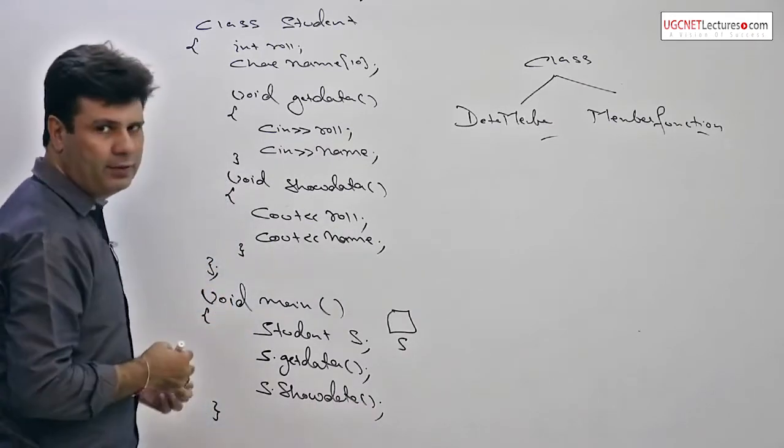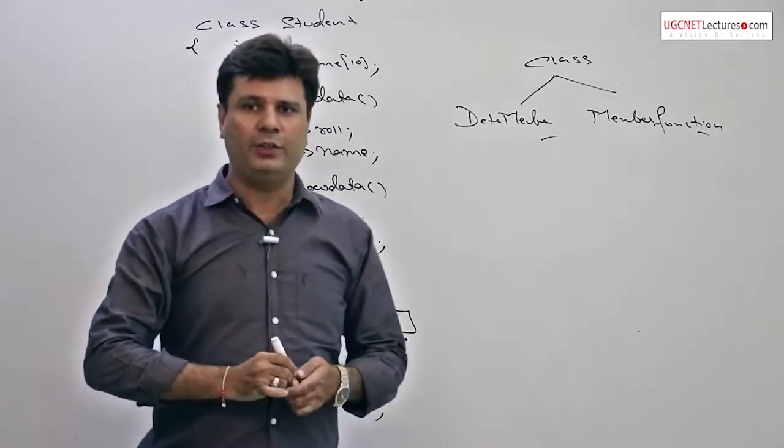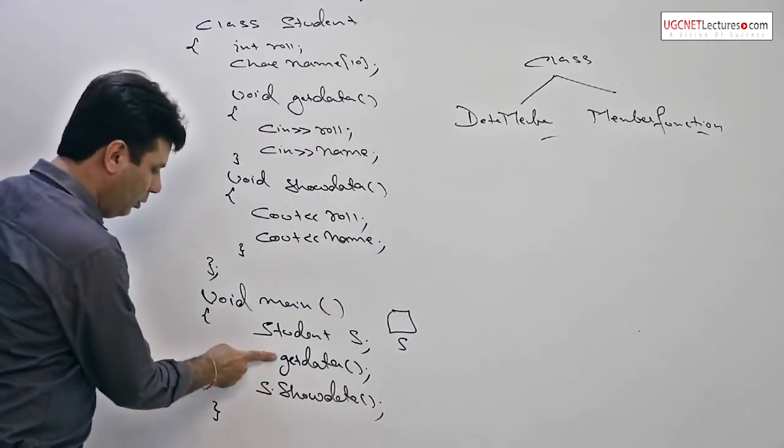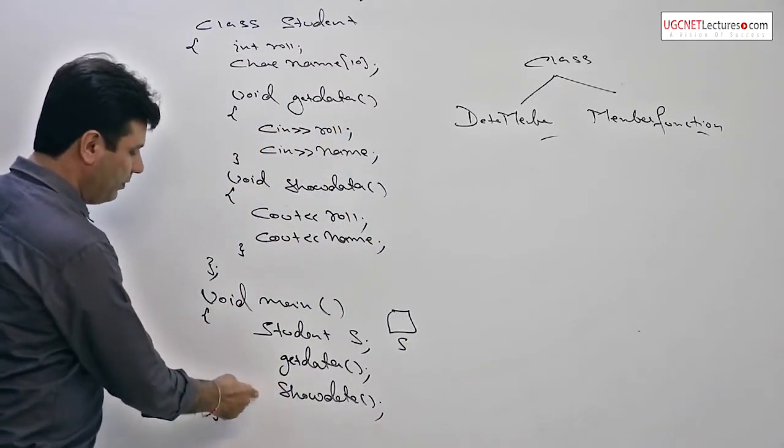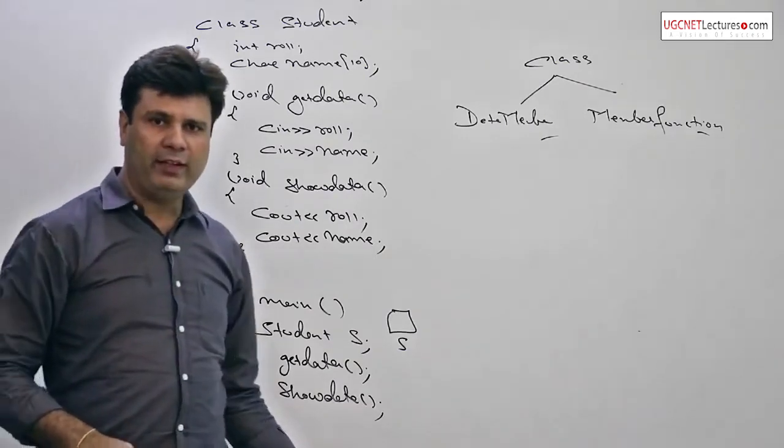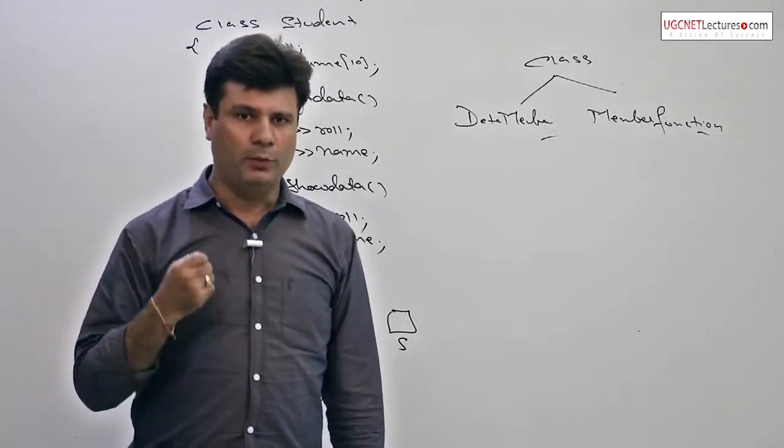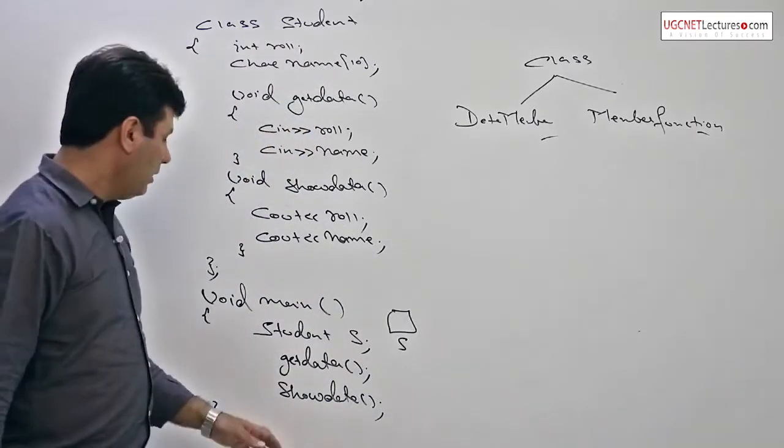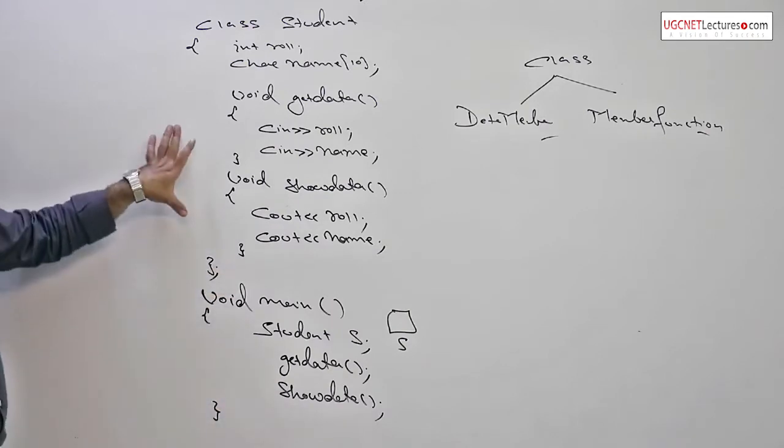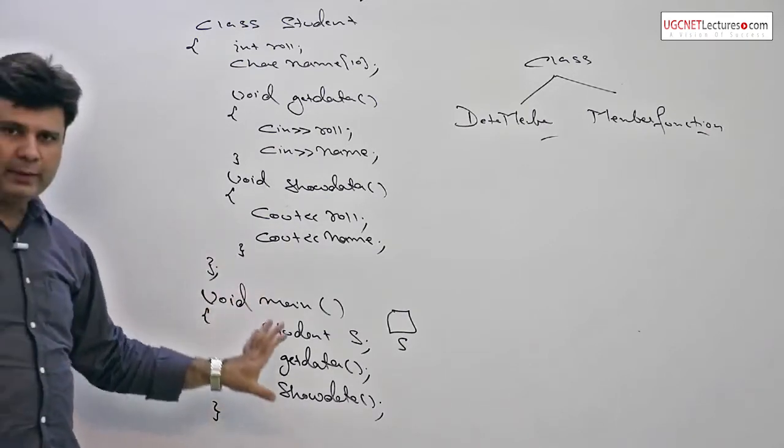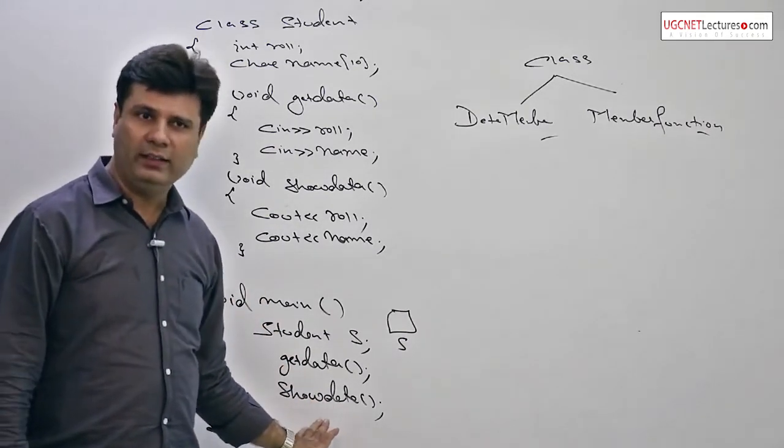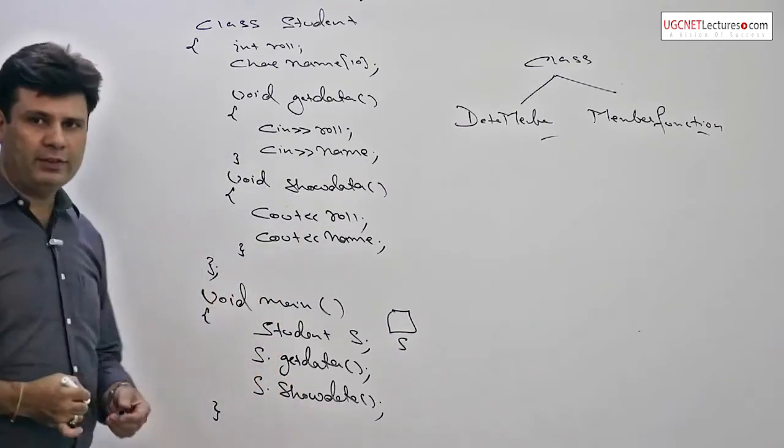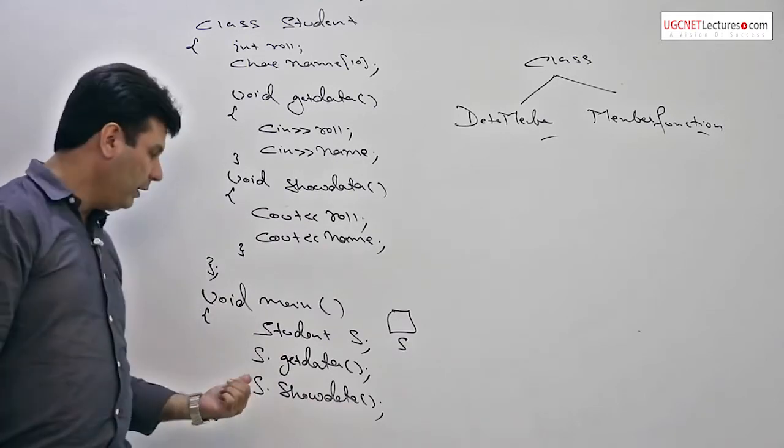By providing the object reference - the reason behind is I am using get data and show data function from outside a class, and the calling requires... if I do not give any object reference, then the compiler will give an error: should have a prototype. You must be aware of the term prototype, the declaration or definition of function. Right now get data and show data are encapsulated within a class. The compiler will not be able to detect where exactly they are defined. So because of this, object reference is required.